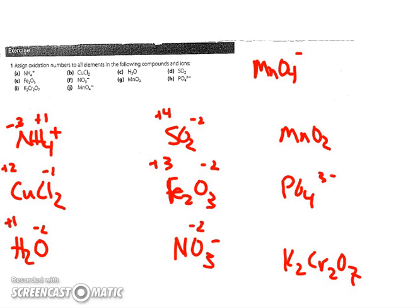Oxygen has priority with a minus two charge, a total minus six charge, but a minus one on the ion, so that would leave my nitrogen with a plus five charge. MnO2: oxygen is at minus two, or minus four overall, making Mn plus four.